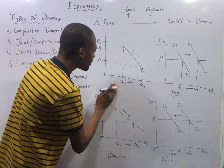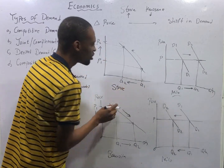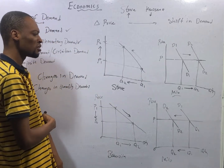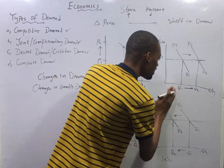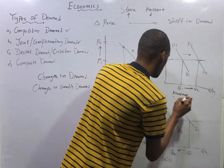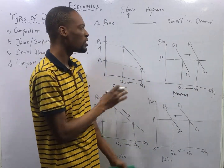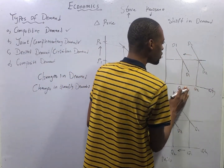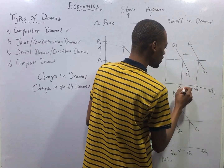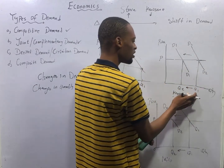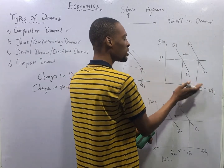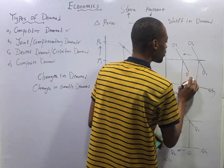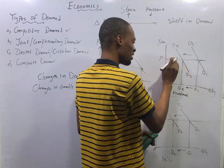For joint demand: if this is stove and the price has increased, as the price increased, the demand for stove will drop and the demand for kerosene will also drop. An increase in the price of stove will lead to a shift in demand for kerosene — not an increase but a reduction. The new quantity is smaller, and demand moves from D1 to D2 because D1 is now greater than D2.